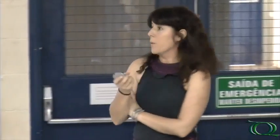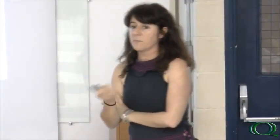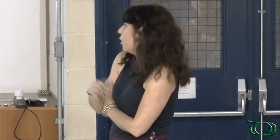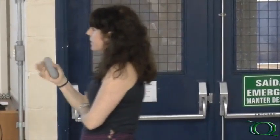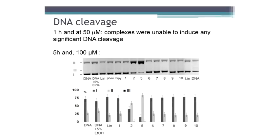After the cytotoxicity studies, we were interested in knowing which could be their target. Usually when you have a phenanthroline ligand, you think that the target might be DNA. Also, with copper, both copper and vanadium have redox activity. So we thought that maybe they could cleave DNA or bind to DNA.